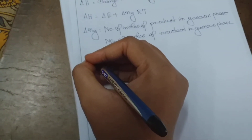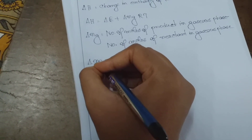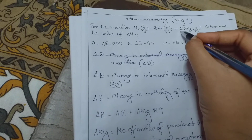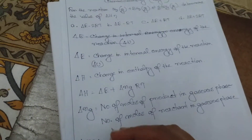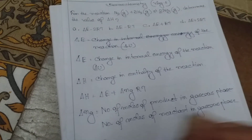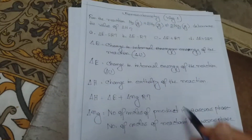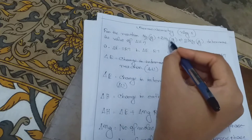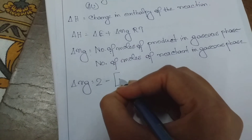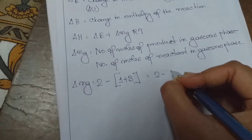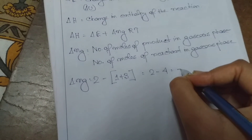So what is the value of delta Ng in this question? The number of moles of NH3 formed is 2, so the number of moles of product is 2. The number of moles of reactants in gaseous phase: nitrogen is 1 plus hydrogen is 3, so reactants total 4. Therefore delta Ng equals 2 minus 4, which is minus 2.